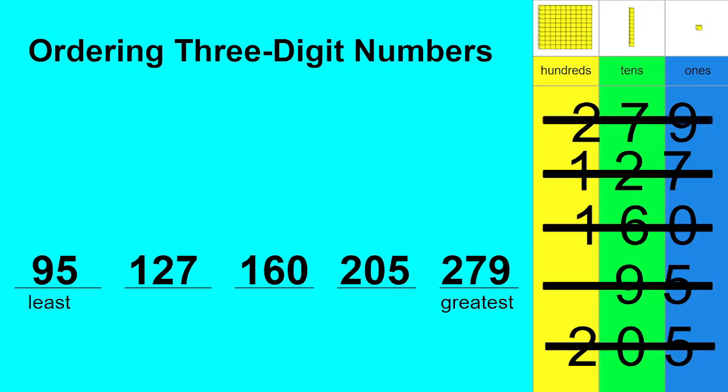Well done. We've now ordered all of these numbers from least to the greatest. When you're ordering three-digit numbers, make sure you look in the hundreds place first, and then the tens place, and finally the ones place if you need to.